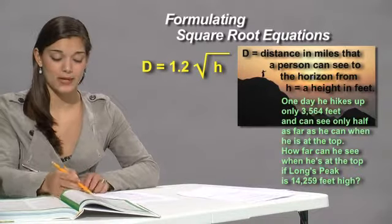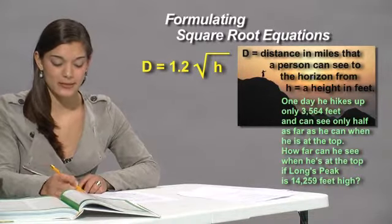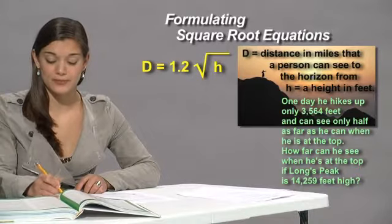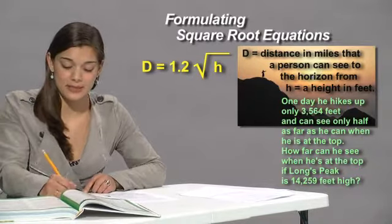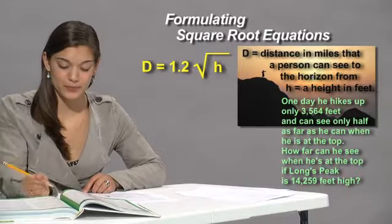We also know that when he hikes up only 3,000 feet, the distance is half what it normally is. That's the same as saying d over 2, half.